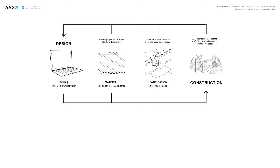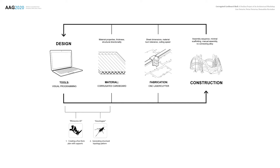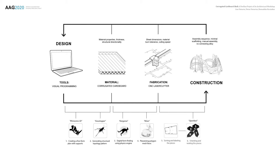For this project we had two main design constraints: the available corrugated cardboard material and laser cutter fabrication. As for the digital tools, we used the Rhinoceros 3D platform together with Grasshopper. The physics engine Kangaroo was used for digital form-finding. We also used polygonal mesh processing tools NGON and OpenNest for orienting and labeling the elements for fabrication and construction.